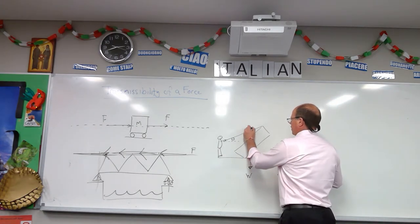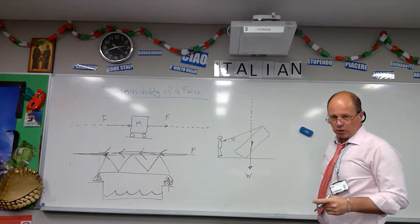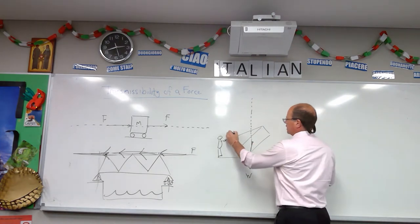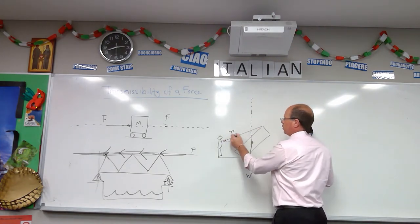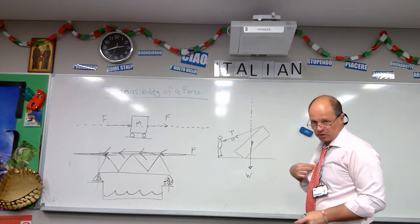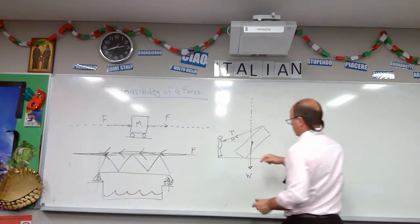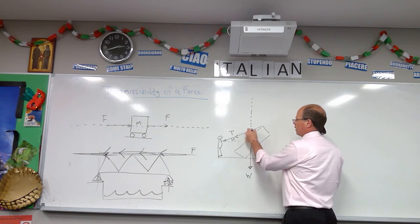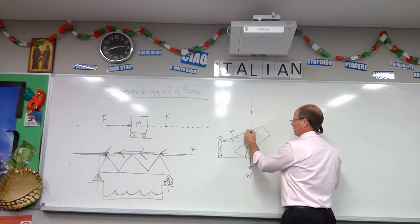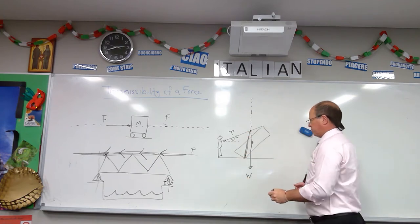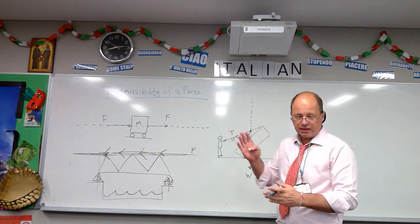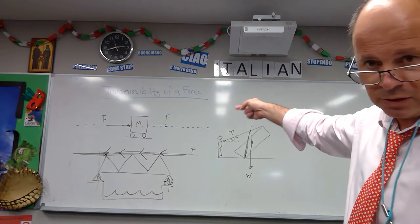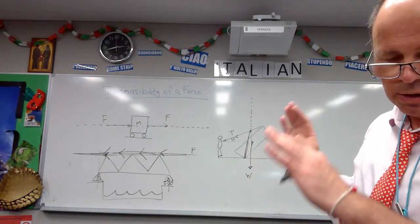What we do is take our line of weight and extend it up, because we're looking for the point of concurrence — a point where two forces are meeting. This is a tension force in the rope pulling this way. So we've got tension and weight, and the third force, which is the reaction force, goes through that point of concurrence. So you've got that whole idea of extending lines of action, and that's where this transmissibility of force comes in as well. This is why we're doing it.